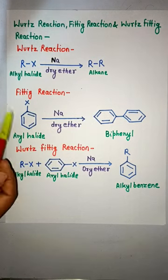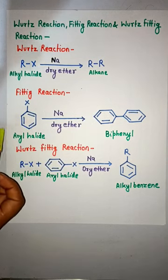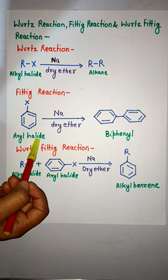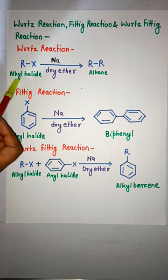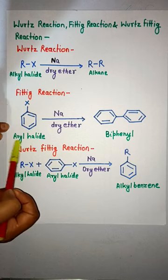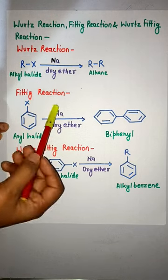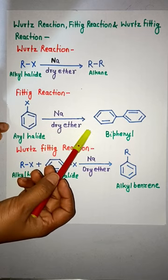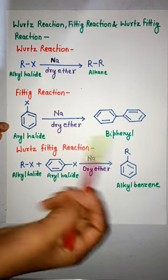Next is Fittig reaction. In Fittig reaction, reactant is aryl halide. In Wurtz reaction, reactant is alkyl halide, and in Fittig reaction, reactant is aryl halide. But the reagent is the same, Na dry ether, and the product is biphenyl.